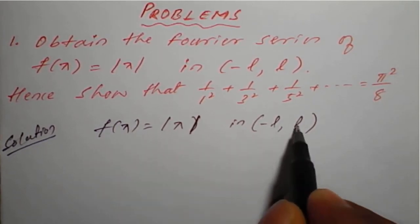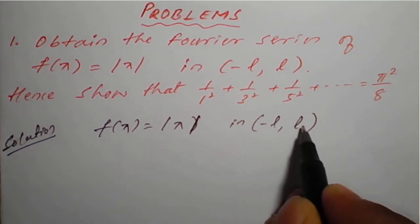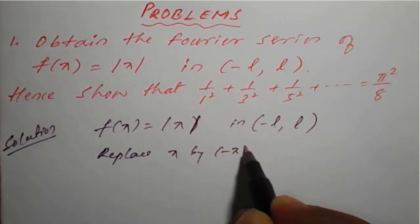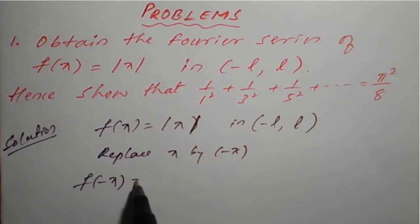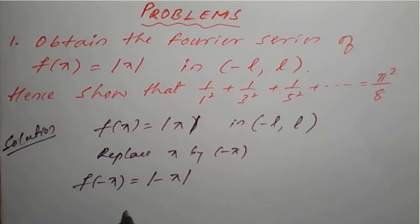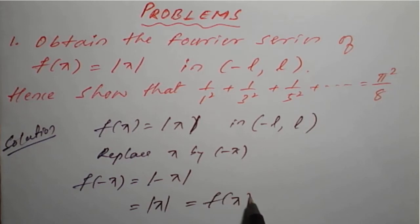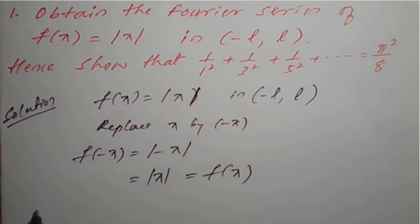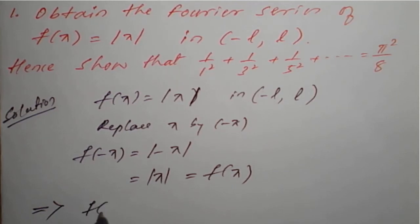To check whether the function is even or odd, replace x by -x. So f(-x) = |-x|. But |-x| is nothing but |x|, because it is an absolute value. So f(-x) = f(x), which implies the given function f(x) is an even function.